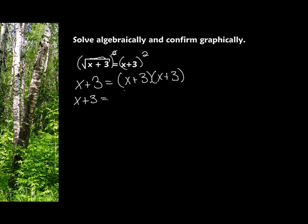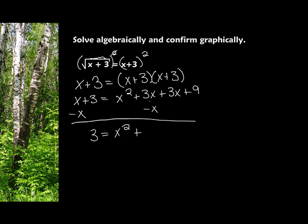x plus 3 equals, now when I FOIL, I get x squared plus 3x plus 3x plus 9. I want to make it equal to 0, so I'm going to subtract x. I should have collected like terms there, but it'll be okay. So 3 equals x squared plus 2x plus 3x plus 9. See, even when you forget to collect like terms, you still have a chance to do it. So I'm going to do it right now.